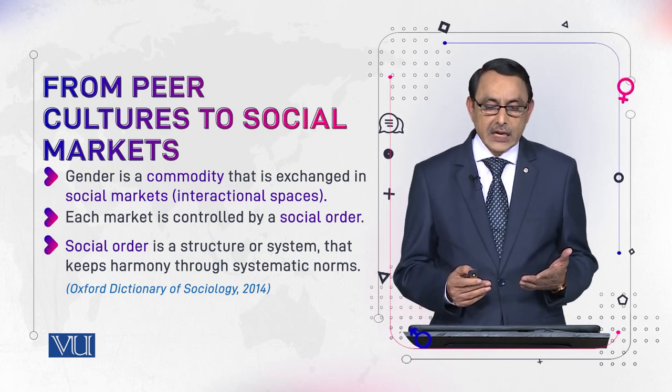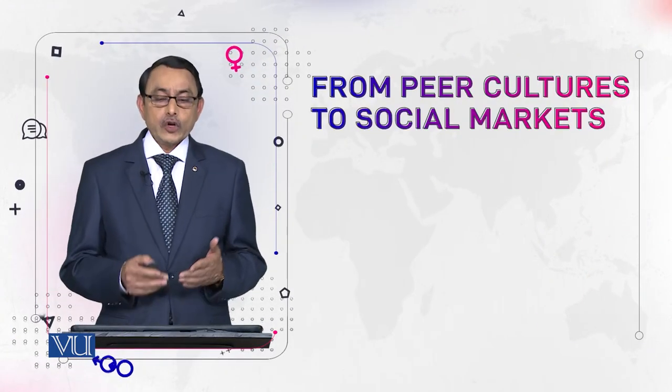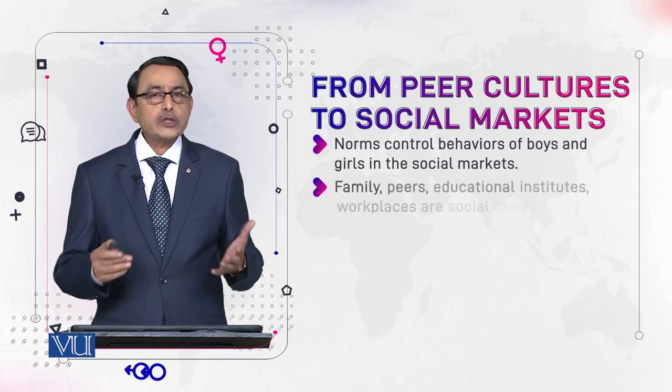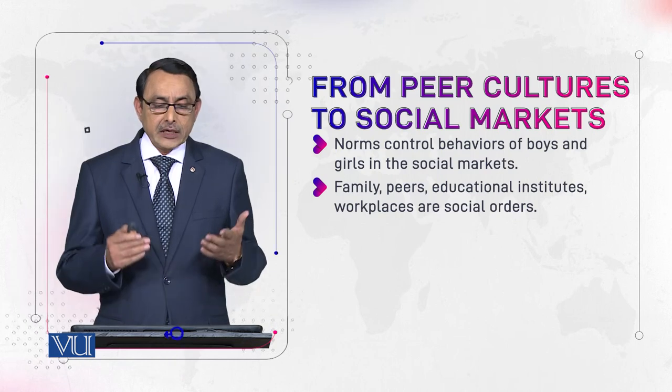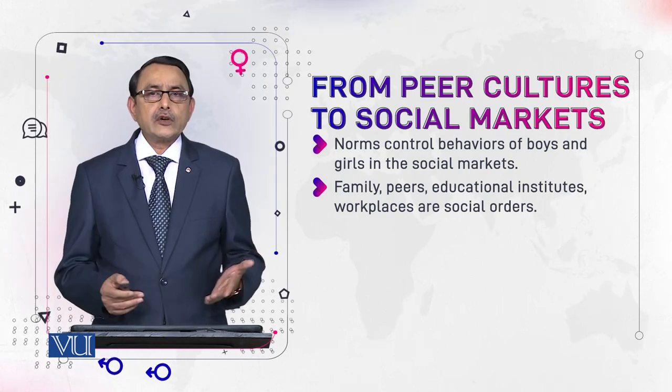Social order is a structure or system that keeps harmony through systematic norms. When we interact in some space or new context, our public behavior and talk are monitored by a new set of rules, and these rules create order and harmony in the context where we work or study — that is why we call it social order. Examples of social markets include your family, peers, educational institutions, and workplaces.